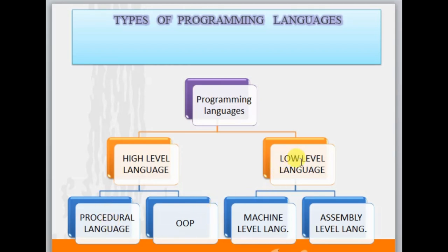Low level language can be further categorized into two categories: machine level language and assembly level language. Machine level language is written in the form of zeros and ones. Assembly level language is written in the form of mnemonic codes. These are languages written at the low level which are directly connected to the computer hardware.